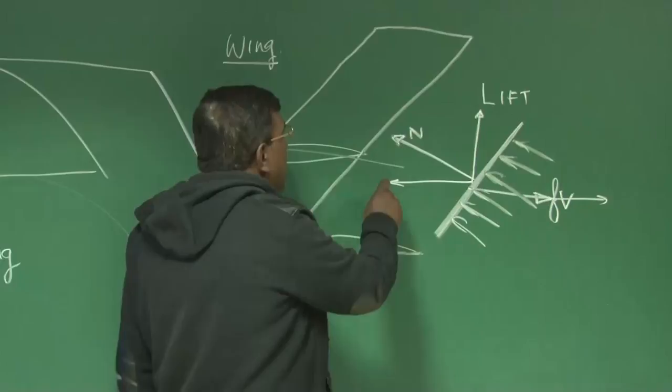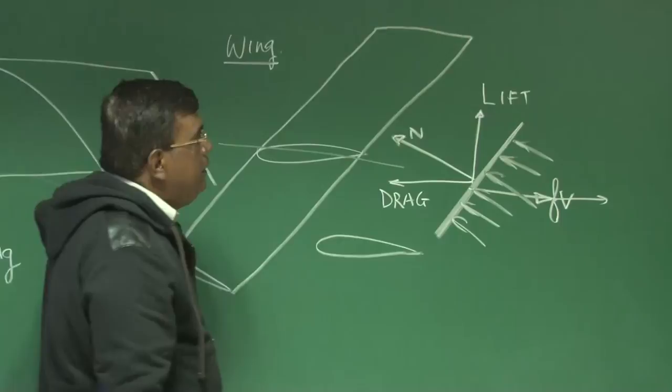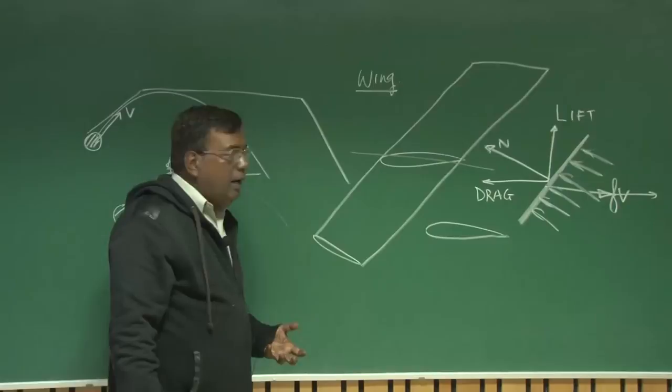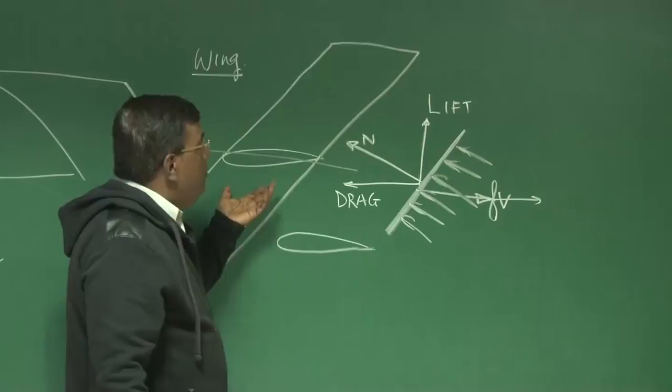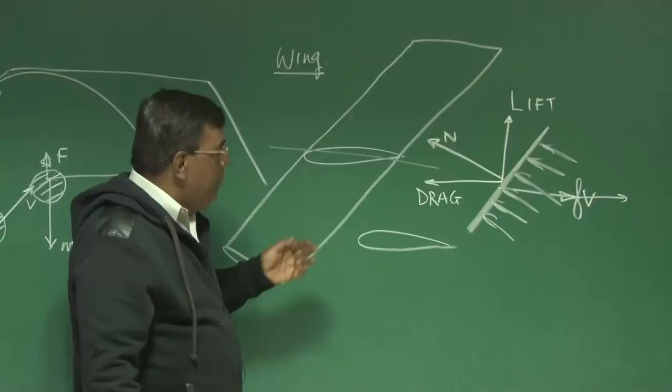And this opposite, which is trying to reduce the speed, we call it drag. Right? And lift and drag are two important things. The primary lift I get from the wing. Larger the area, more the lift. Larger the speed, more the lift. Better this contour, more the lift.